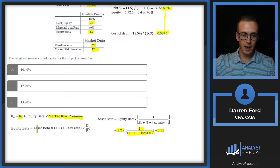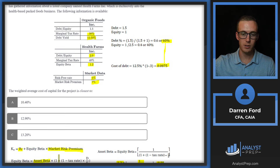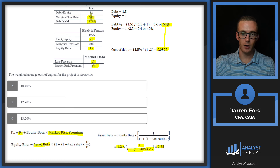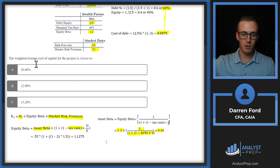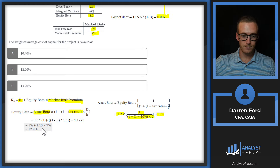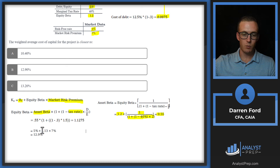Now we convert that 0.55 asset beta back into Organic Foods' equity beta: equity beta = asset beta times [1 plus (1 minus tax rate) times debt-to-equity]. Using Organic Foods' 30% tax rate and D/E of 1.5, we get an equity beta of 1.1275. Plugging into CAPM: 5% plus 1.13 times 7% gives us approximately 12.9% for the cost of equity.